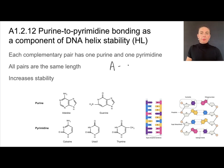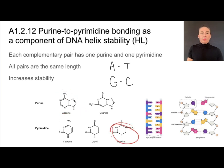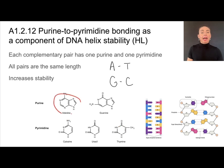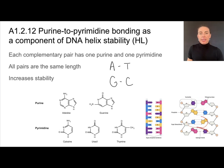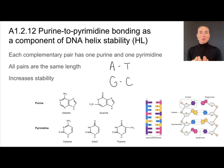Going into a little more depth about complementary base pairing: adenine can only pair with thymine and guanine can only pair with cytosine in DNA. In each of those complementary base pairs, you're going to have one purine and one pyrimidine. Purines and pyrimidines have different structures, but if you have one of each, you'll have one double-ringed base and one single-ringed base. That creates base pairs of equal length, which helps increase the stability of our DNA molecule.